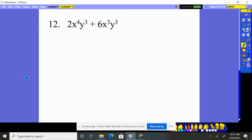12, two and six. A two is the greatest common factor. We have X to the fourth, X to the third. So the most we can factor out is X to the third. Y to the third, Y to the third. So we can factor out Y to the third for each.